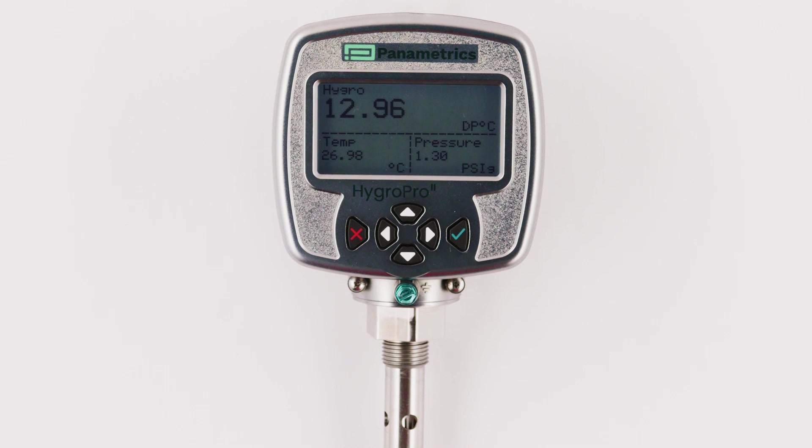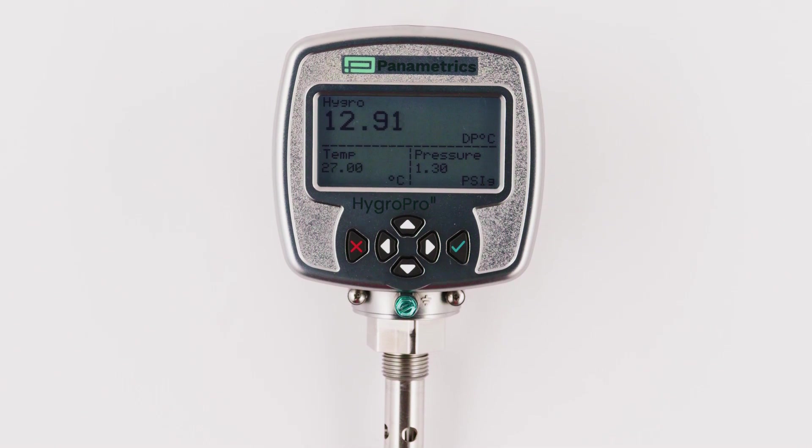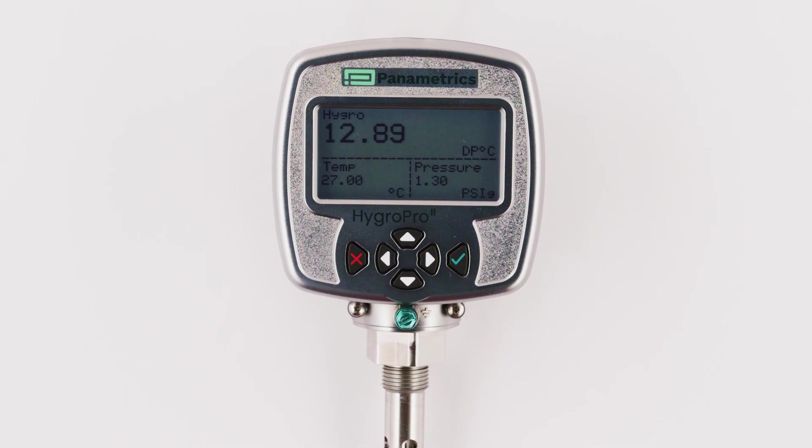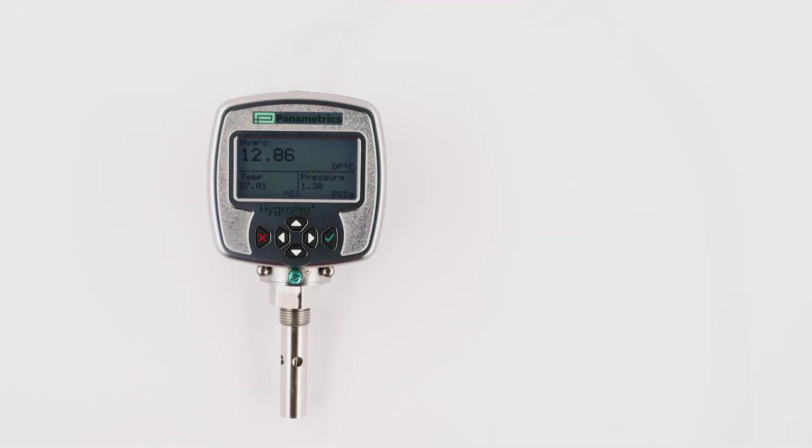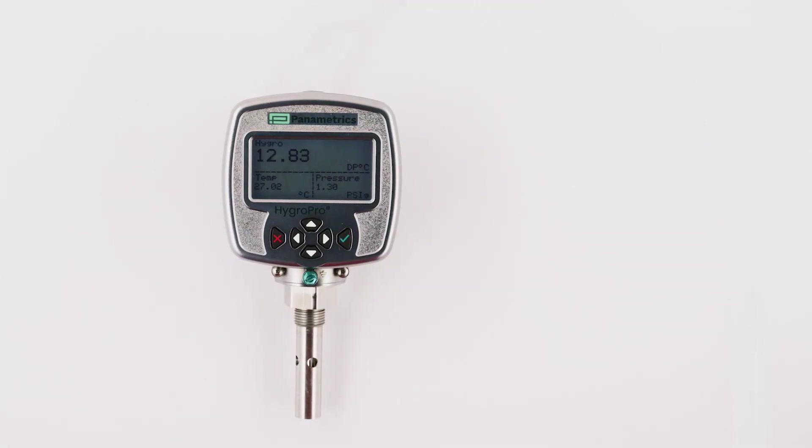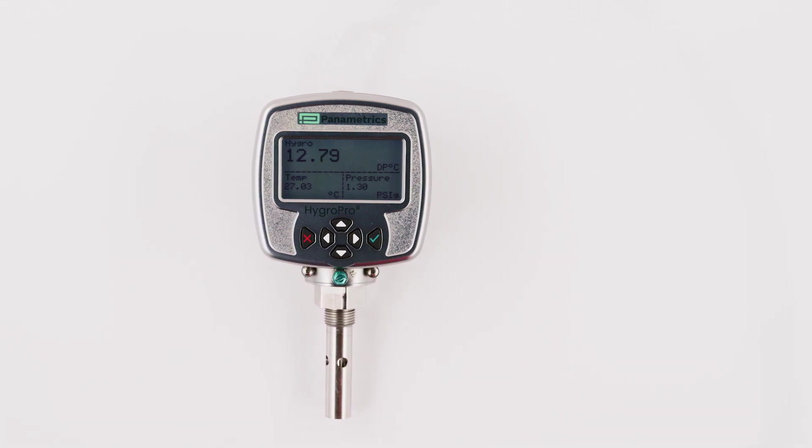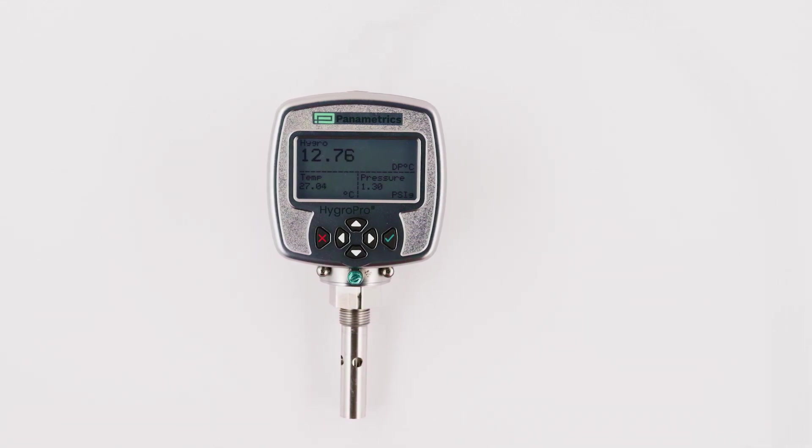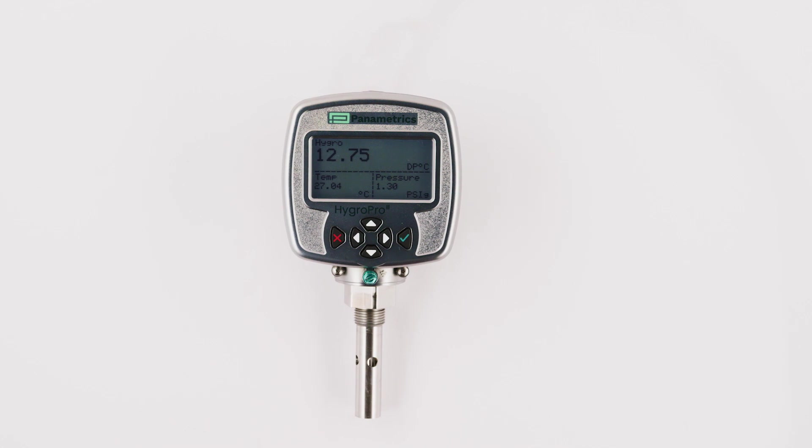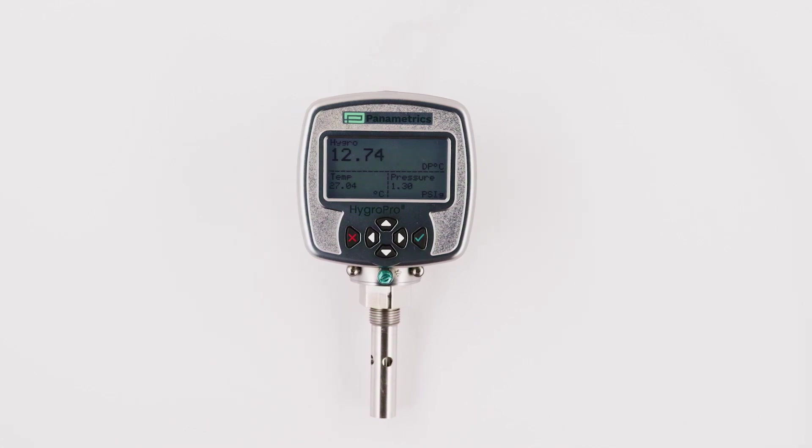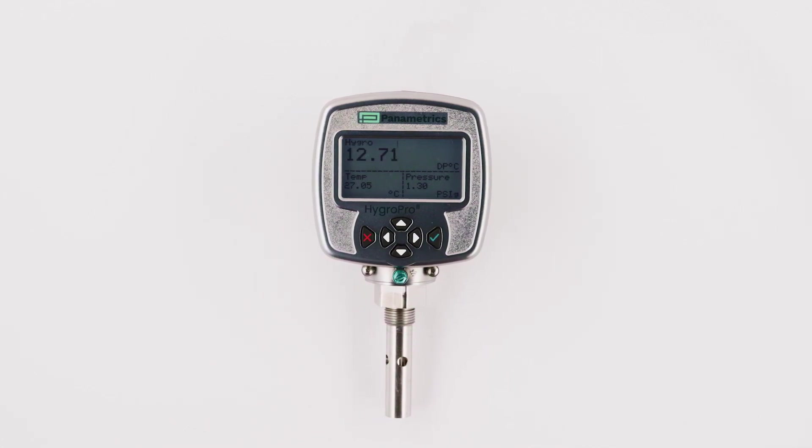The Panametrics HygroPro 2 FX sensor accurately reports the moisture content even with ambient temperature changes. HygroPro 2 is fast to respond during dry-down conditions and wet-up excursions. With digital HART 7 communications, you can send multiple moisture measurements and probe diagnostics to your control system via the loop-powered analog output.